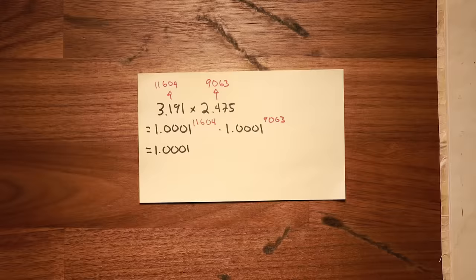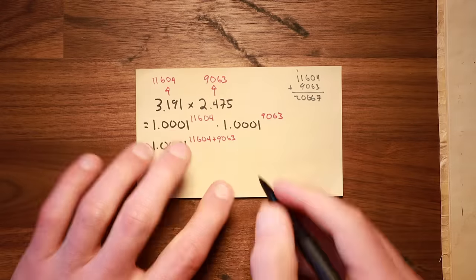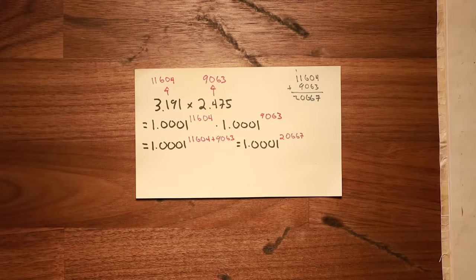Since both numbers are rewritten as powers of the same base, all we have to do now is add our red number exponents together, leaving us with 1.0001 to the power of 20667.